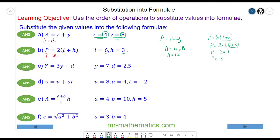Question c: Y equals 3y plus d, and the lowercase y is given as 7 and d is 2.5.